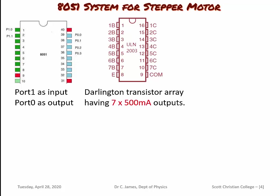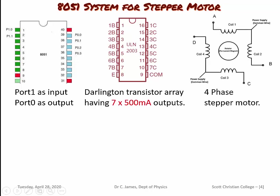In the ULN-2003, you see seven inputs and seven outputs. This is a low-active IC — if we give a low signal at input 1B, the corresponding output is 1C. The output of this IC can be connected to the four phases or four field coils of the stepper motor. So the system consists of the 8051 microcontroller, the ULN-2003 driver IC, and the stepper motor.